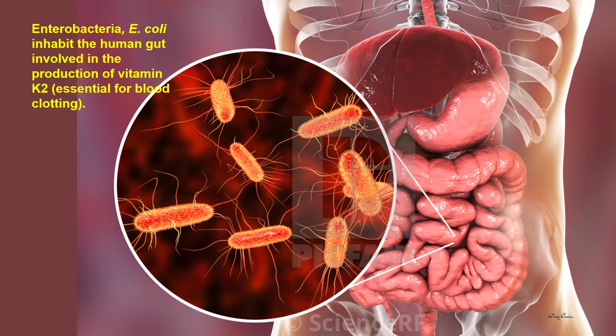Another example is symbiont bacteria such as E. coli, which is an enteric bacteria — enteric meaning related to the digestive system. These bacteria inhabit the human gut and are involved in the production of vitamin K2, which is an important element for the blood clotting mechanism.